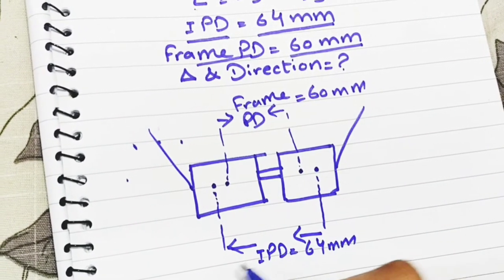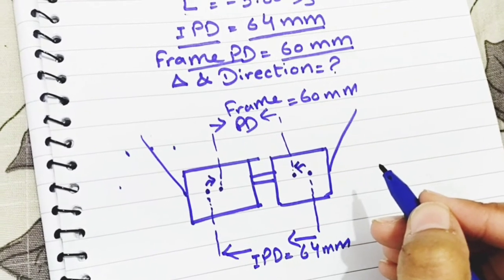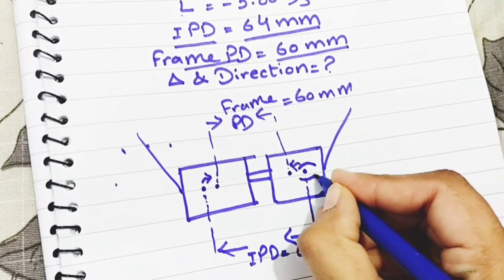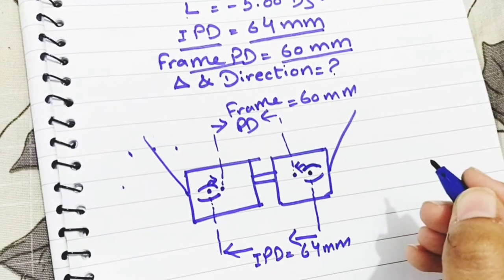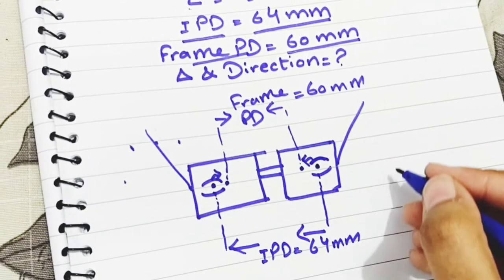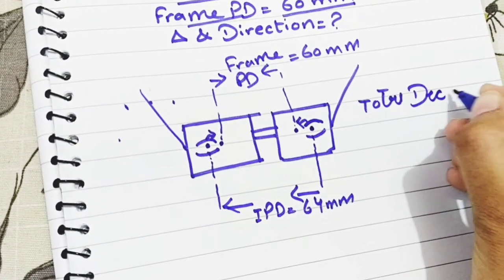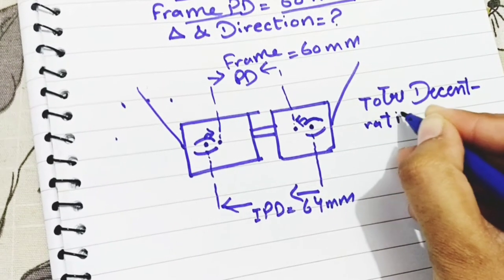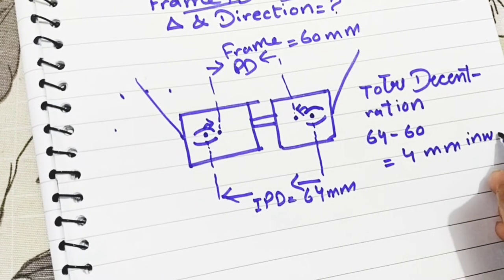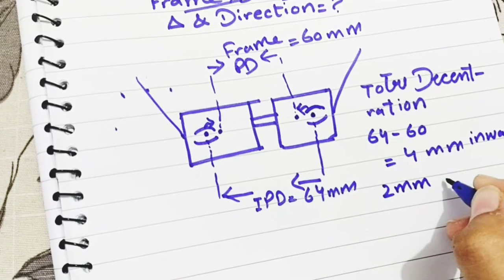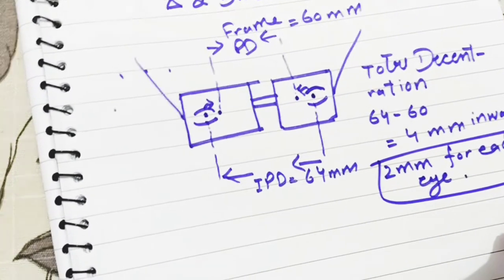As we can see in this diagrammatic representation, the eyes move inward to see through the geometric center of the frame, so decentration is inward. Total decentration is the difference of frame PD and interpupillary distance: 64 minus 60 mm equals 4 mm. This is total decentration — 4 mm inward — so 2 mm inward decentration for each eye.